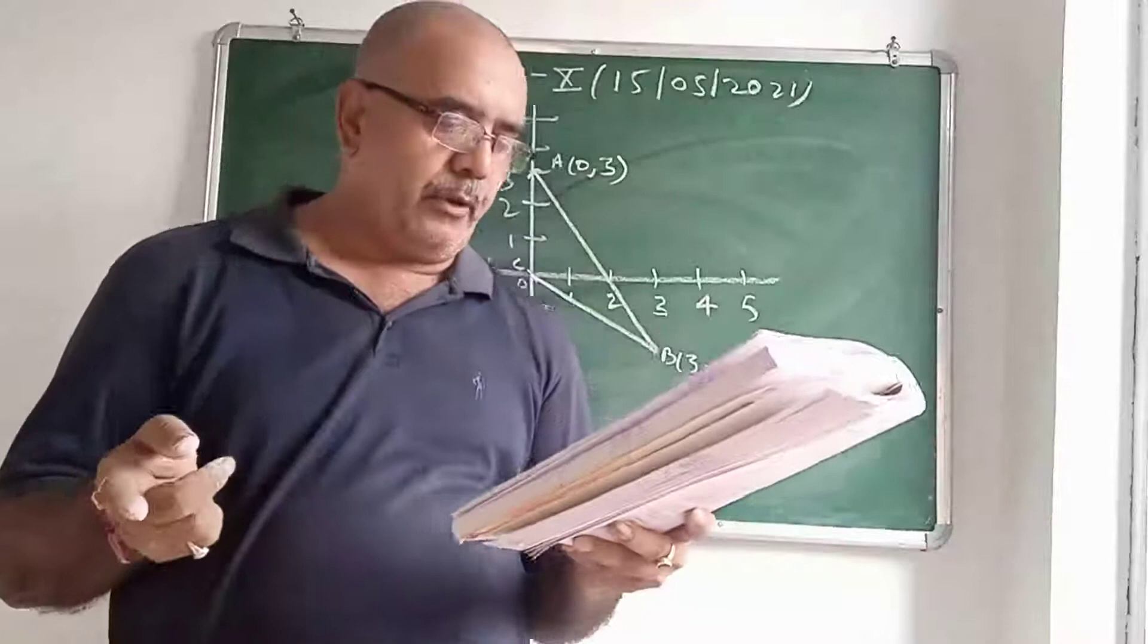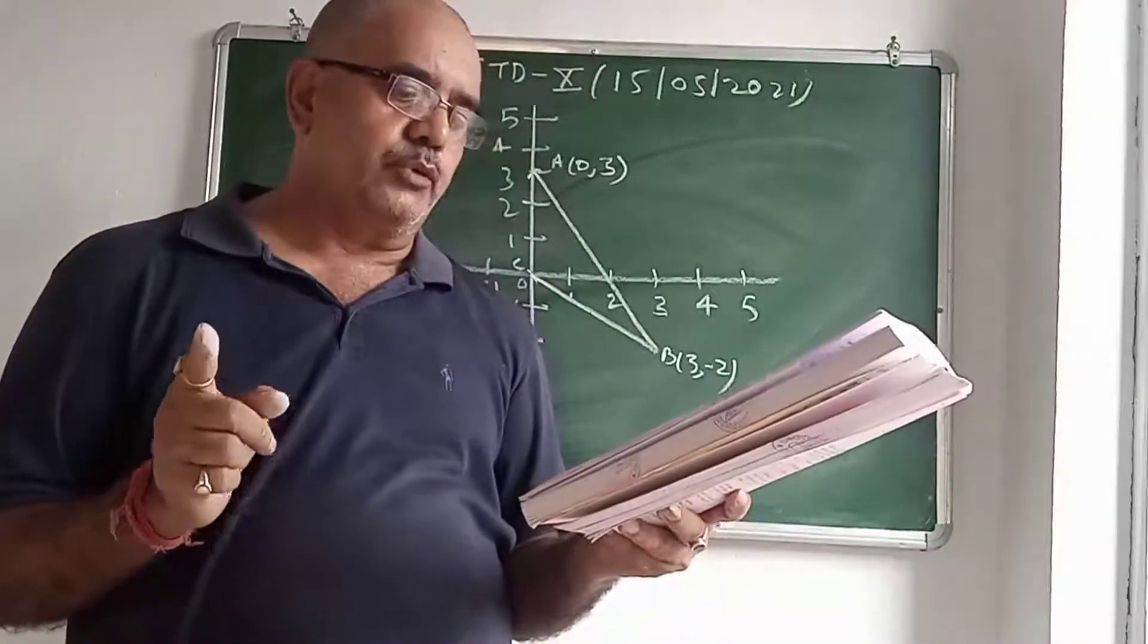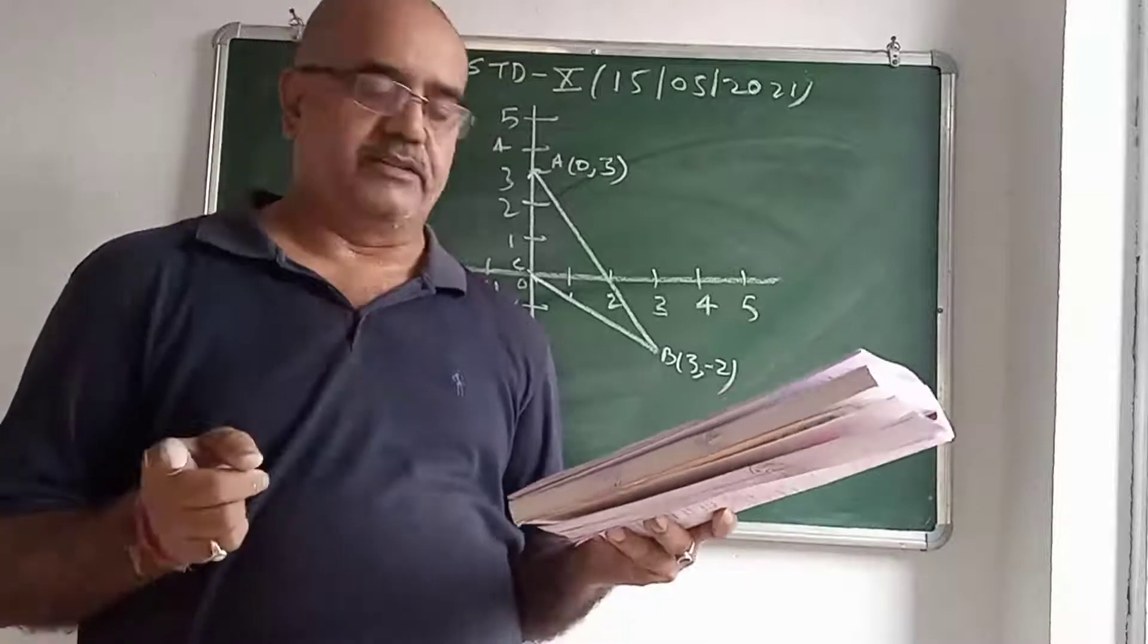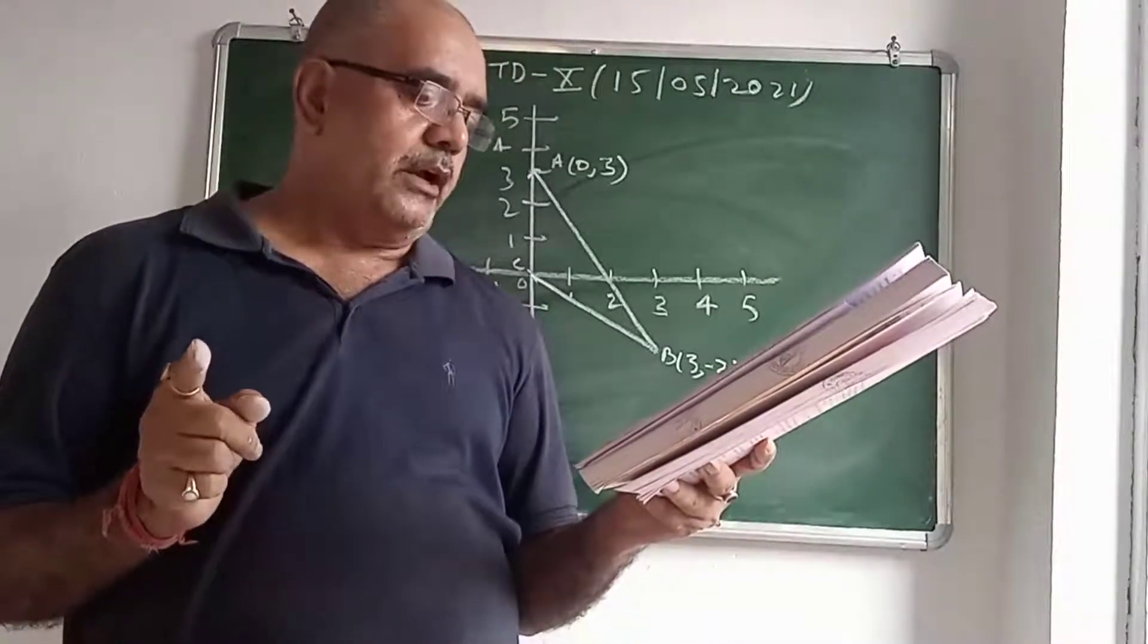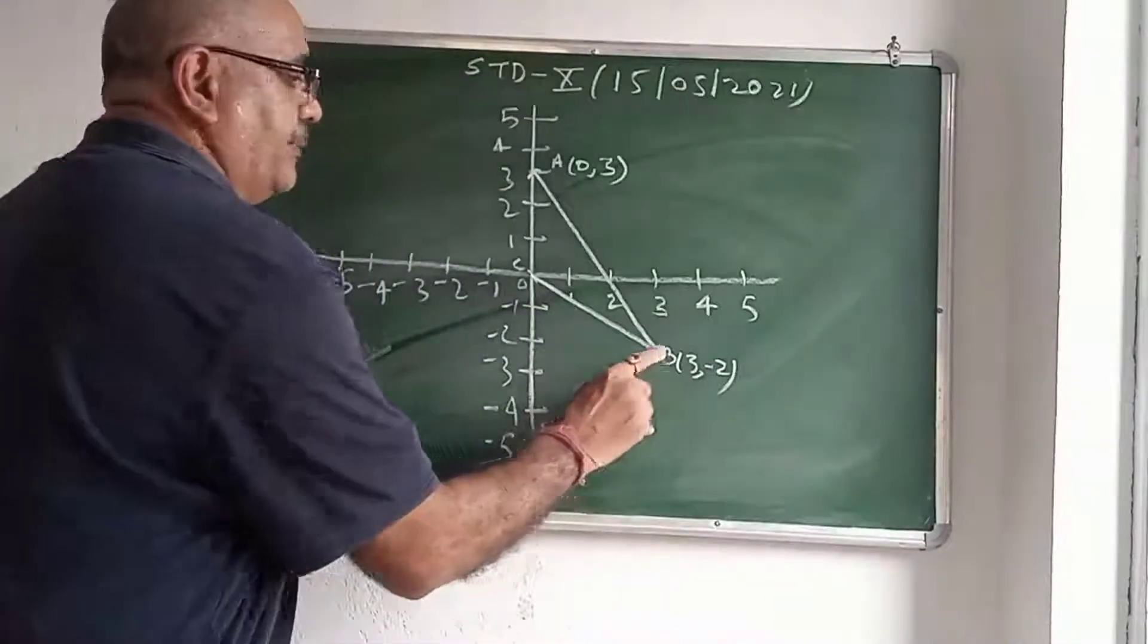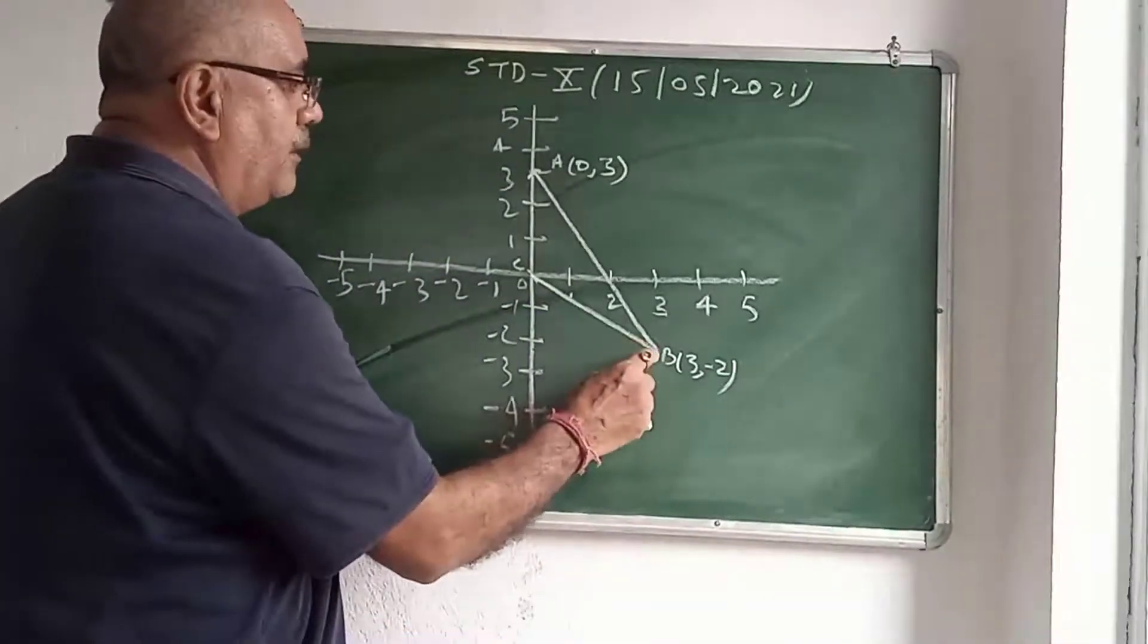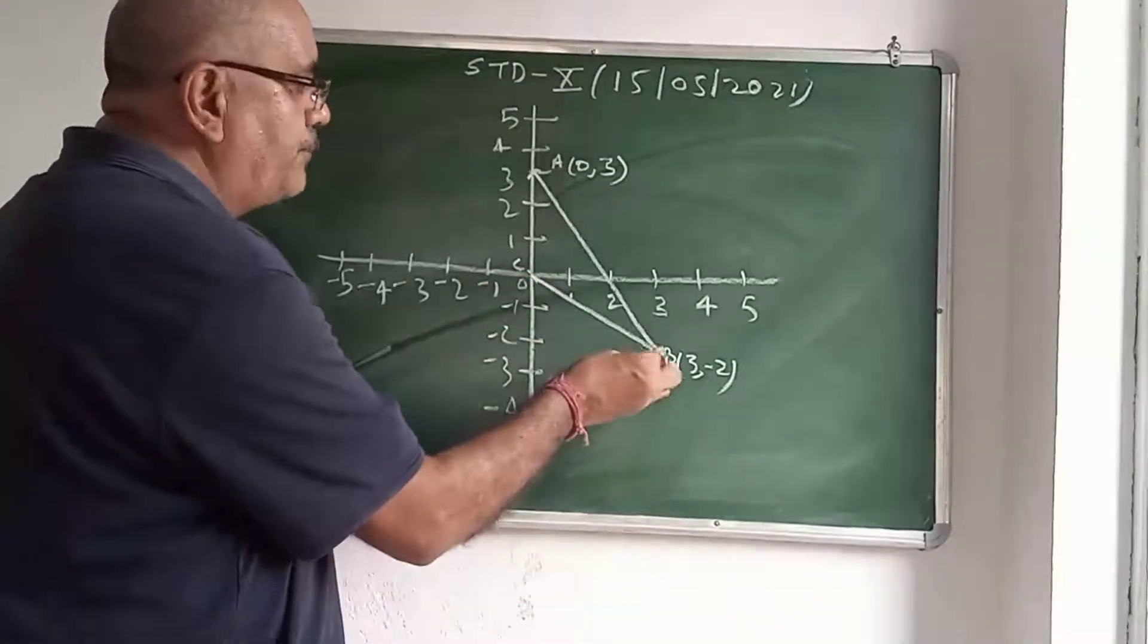Plot D. Now what is? To plot the triangle on the graph sheet, taking 2 cm equals 1 unit on both the axis. Plot D, the reflection of B in the y-axis. Where is B? This is B. And for this B, which is the y-axis?